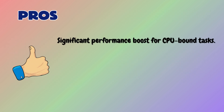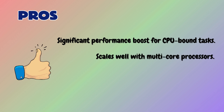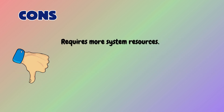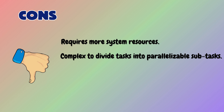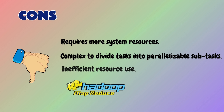Parallelism significantly boosts the performance of CPU-bound tasks and scales well with multi-core processors, reducing processing time for large computations. On the downside, parallelism requires more system resources like more CPUs and can be complex to divide tasks into parallelizable subtasks — Hadoop MapReduce is an example of this.